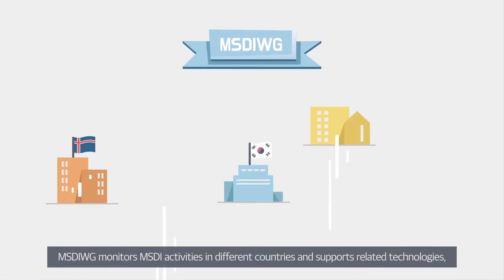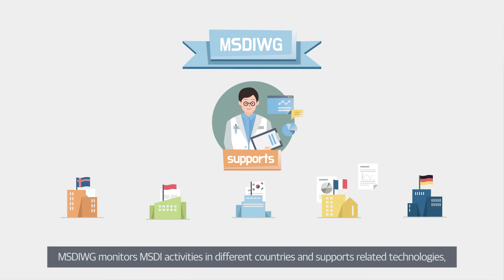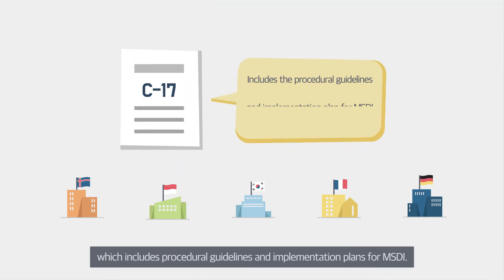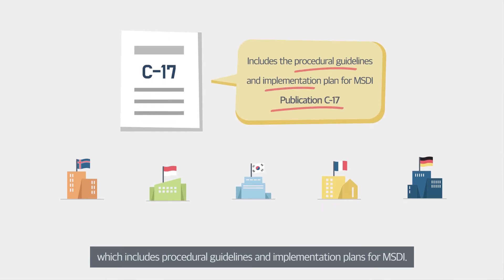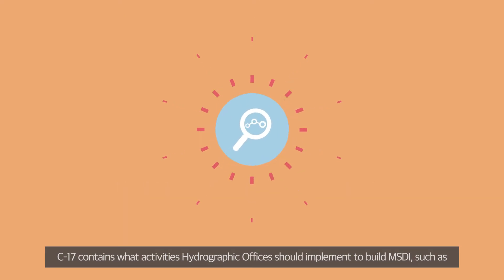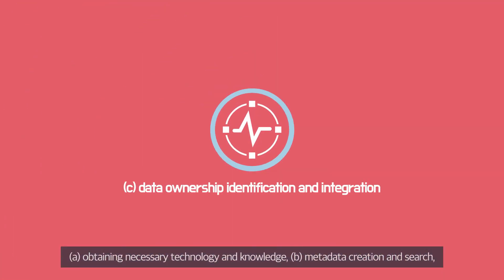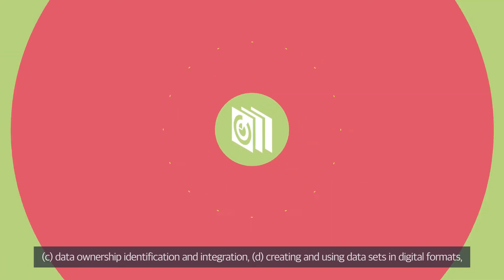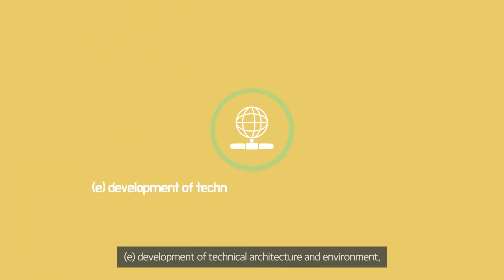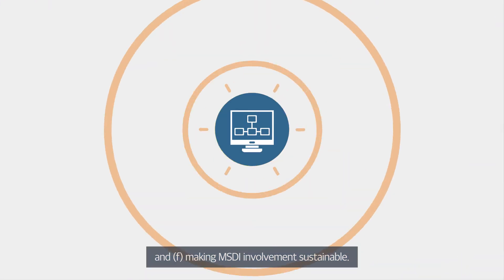The MSDI Working Group monitors MSDI activities in different countries, supports related technologies, and published the IHO publication C-17, which includes procedural guidelines and implementation plans for MSDI. C-17 contains what activities hydrographic offices should implement to build MSDI, such as obtaining necessary technology and knowledge, metadata creation and search, data ownership, identification and integration, creating and using datasets in digital formats, development of technical architecture and environment, and making MSDI involvement sustainable.